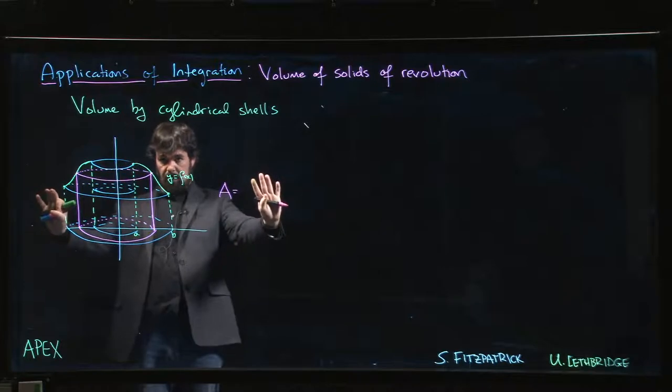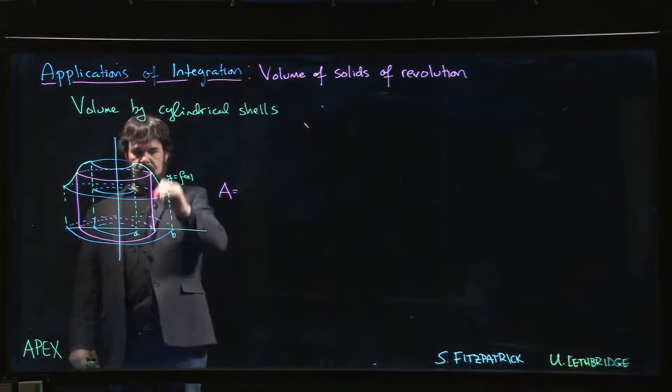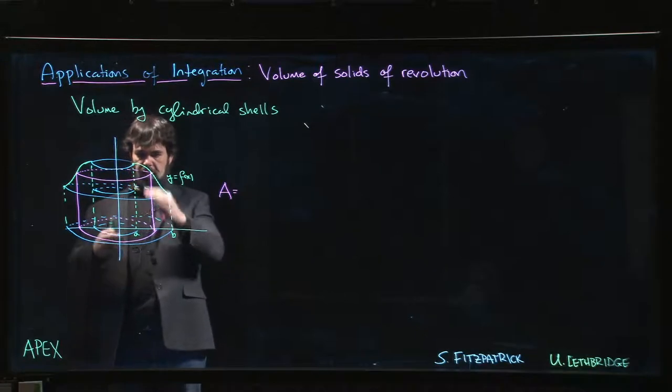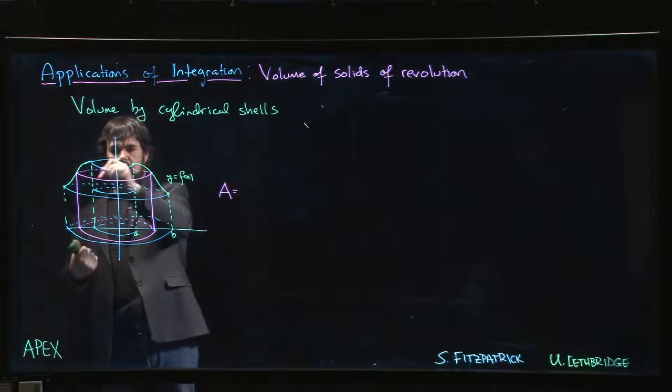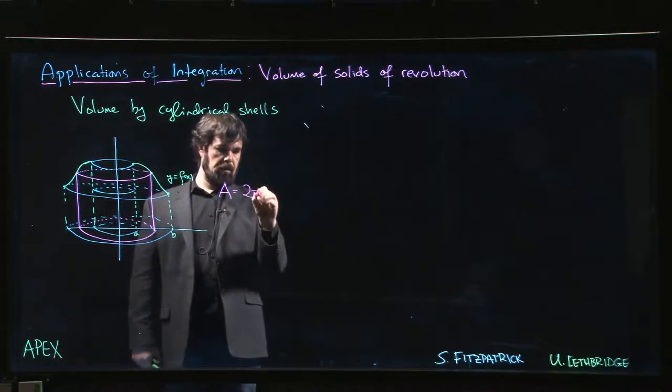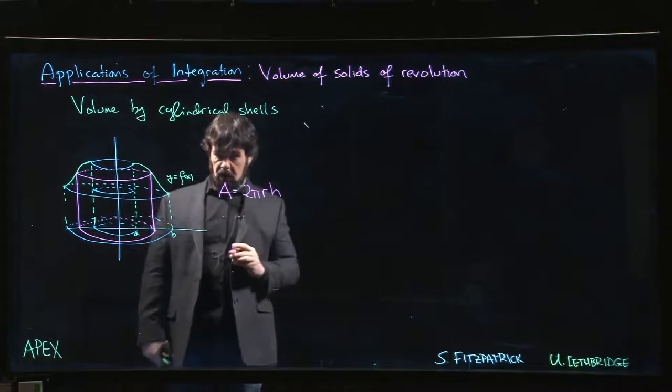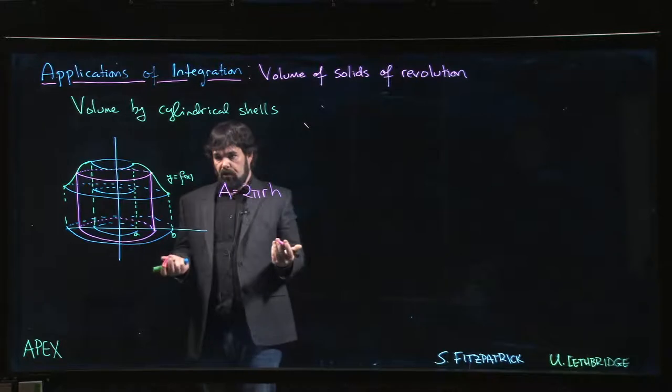If you imagine cutting it and laying it flat, you get a rectangle. The height of the rectangle is the height of the cylinder. The width of the rectangle is the circumference of the cylinder. So the area is 2πr times h—that's the surface area of that cylinder that we've drawn in.